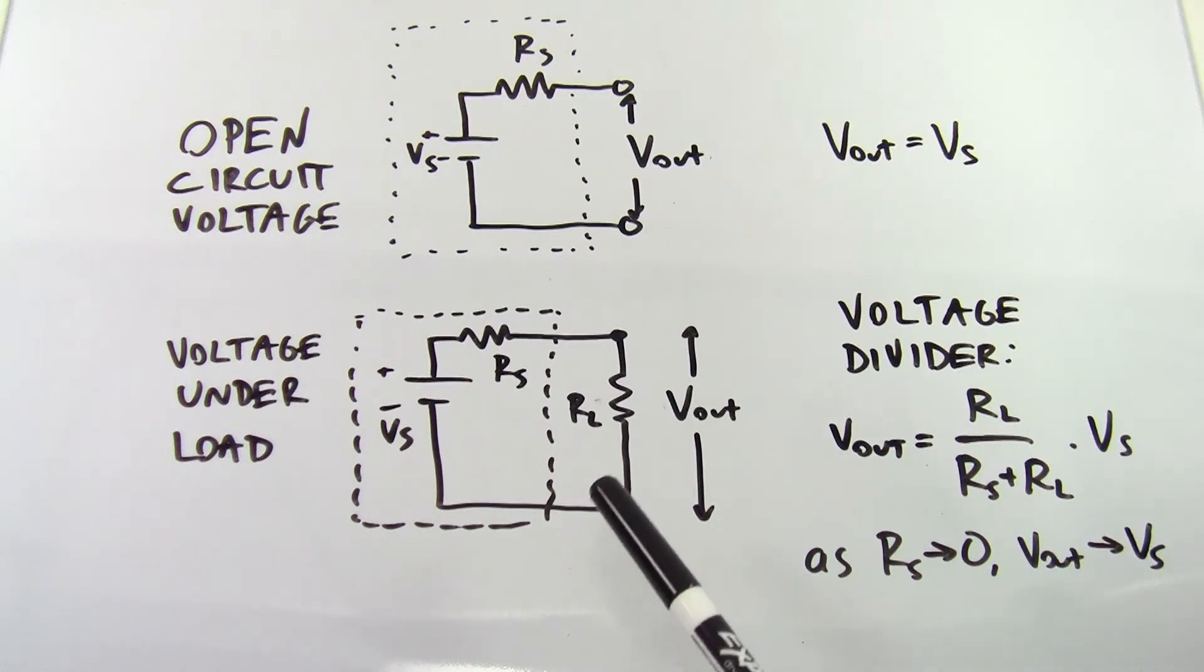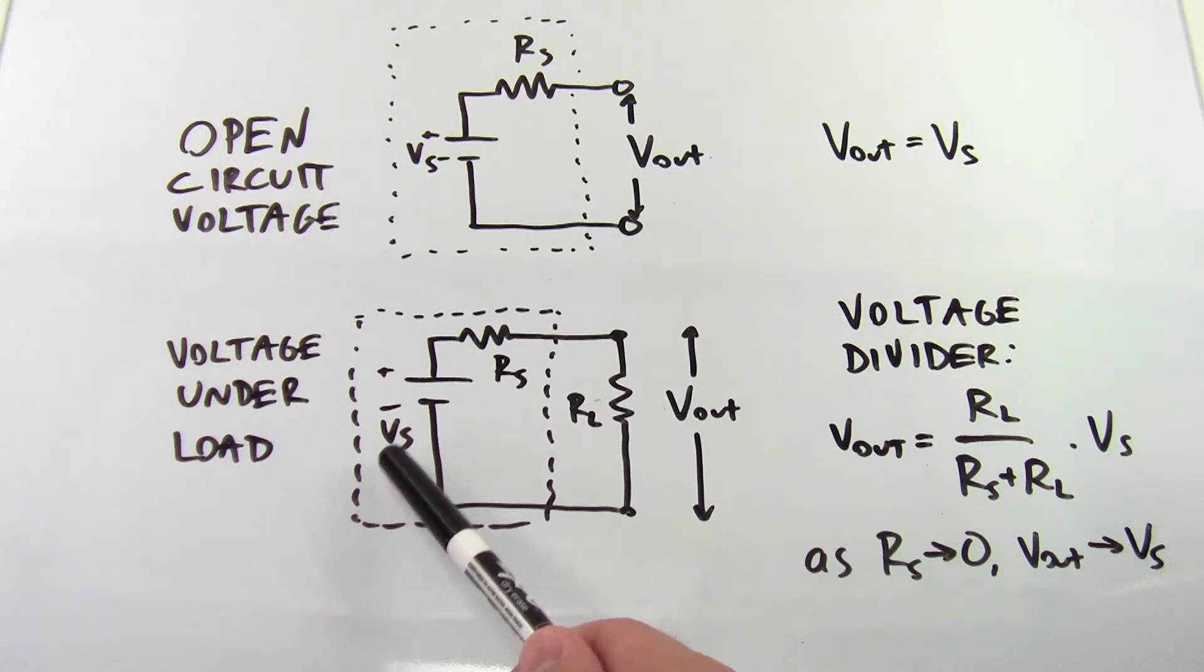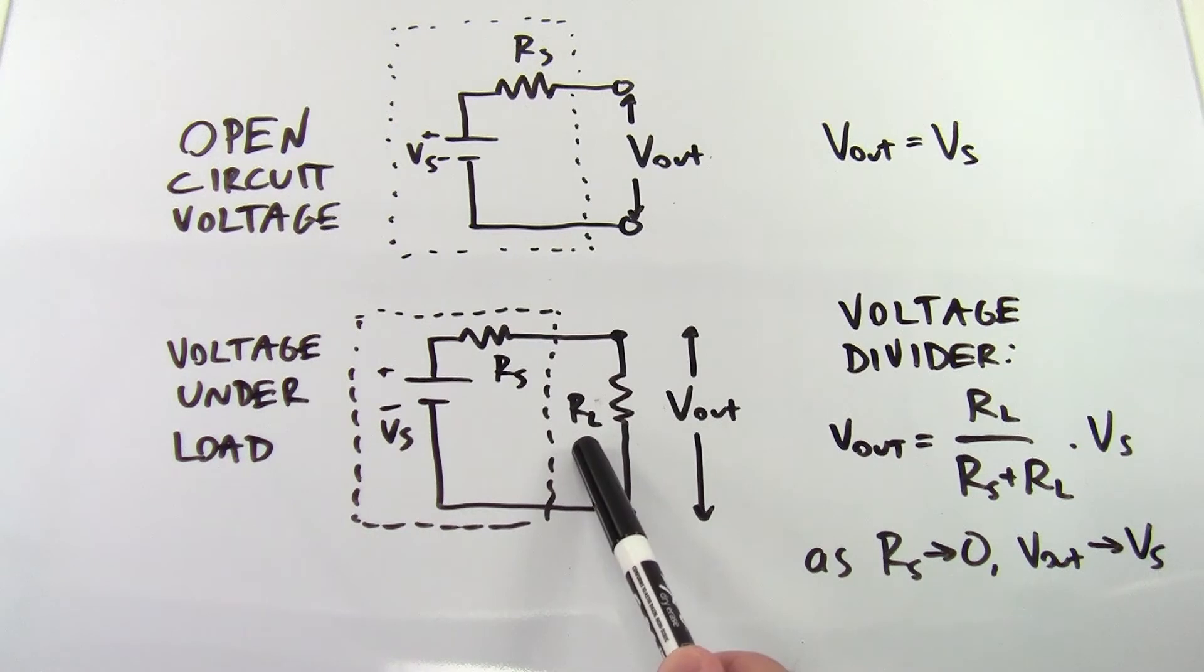Now, this gets more interesting when you attach the battery to an external load. So, in this case, we have the source voltage VS, the internal source resistance RS, and the external load resistance RL. Now, we have current flowing through this entire circuit.